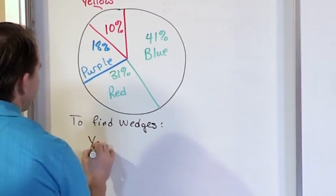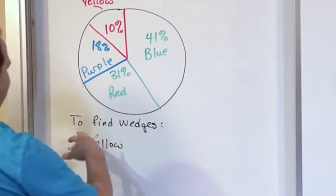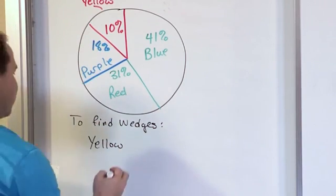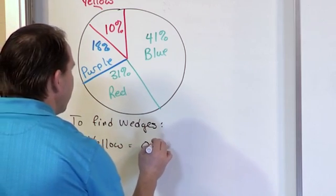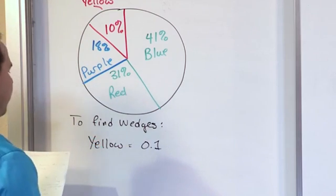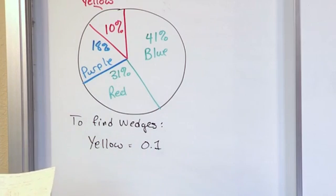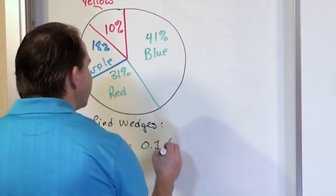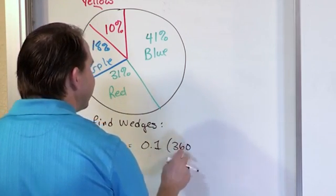So, for instance, for the yellow wedge, I'm going to take a bunch of answers on the telephone, and I'm going to end up finding that 0.1 of all of our answers, 0.1 as a fraction of our answers answered yellow. So what I do is I multiply that by 360 because there are...